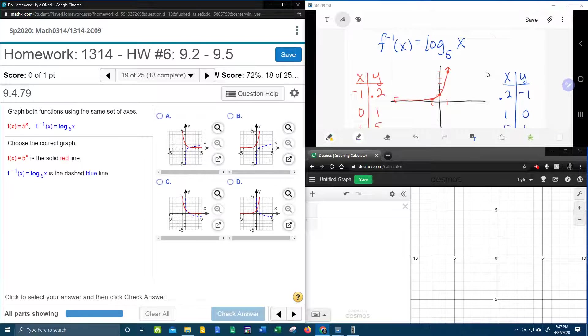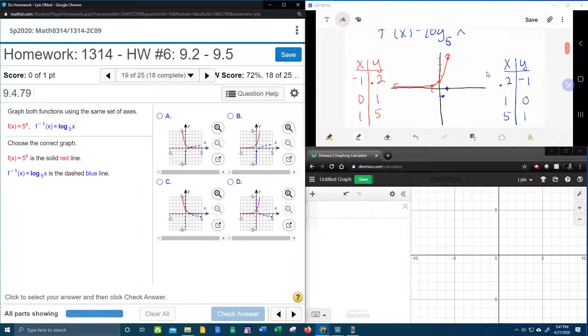Now let's plot the blue ordered pairs. So if x is 0.2, y is negative 1, that's going to be about right there, over 0.2 down 1. 1 is at 0. And then if I go all the way over to 5, I'm going to be up at 1.